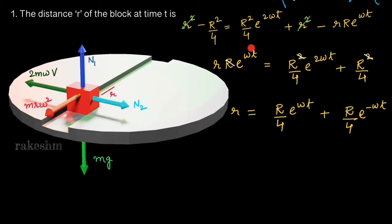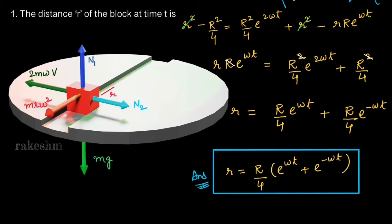Taking the e^(ωt) term to the other side and dividing, we write it as (R/4)·e^(-ωt). Taking R/4 as a common factor, we finally get r = (R/4)·(e^(ωt) + e^(-ωt)). This is the final answer for the distance r of the block at time t.